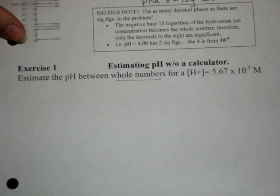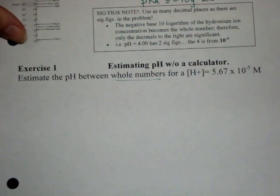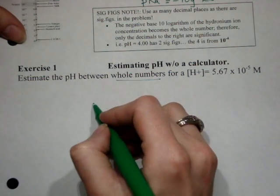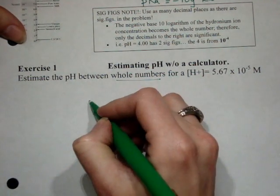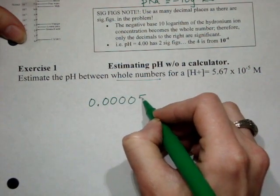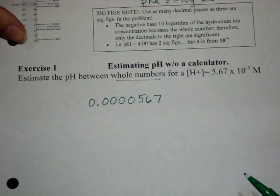So what we have to look for is essentially which 1 times 10 to the something, two values, are we between. So if I write this number out in expanded form, that's what I get, 0.0000567.